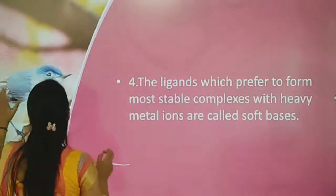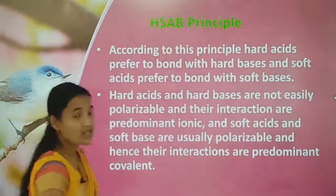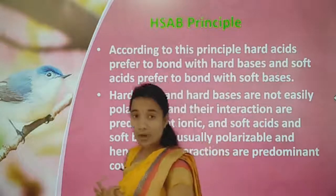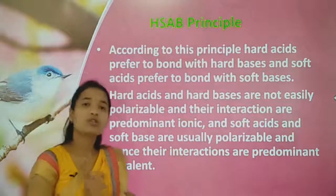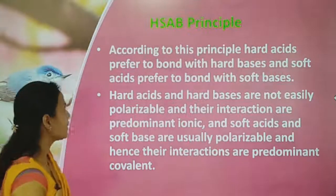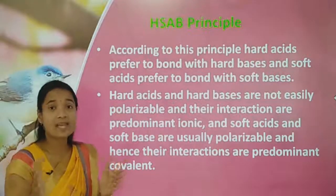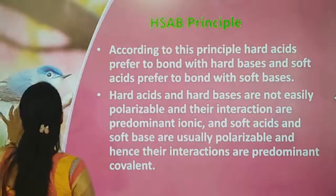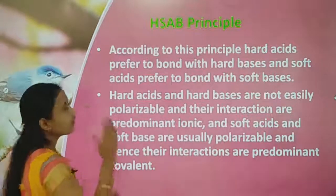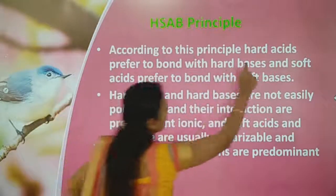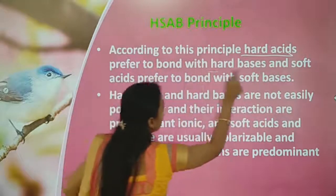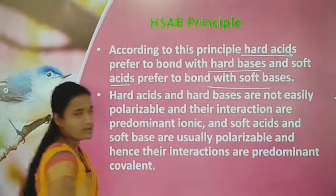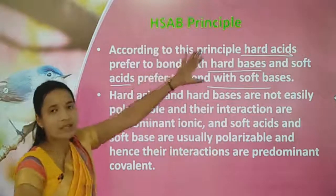Now let's look at the HSAB principle. We have four categories: hard acids, soft acids, hard bases, and soft bases. According to the HSAB principle, hard acids prefer to bond with hard bases, and soft acids prefer to bond with soft bases.